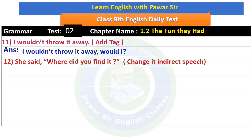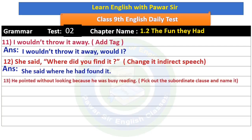For a WH question, to convert direct to indirect speech: 'She said' — instead of 'said,' we can use 'asked' or 'told.' This is a WH question, so the WH word 'where' stays with the sentence. The inner clause 'did you find it' is in simple past tense, which changes to past perfect tense. So the answer is: 'She said where he had found it.'